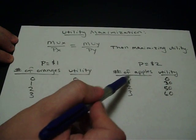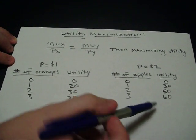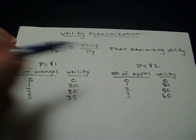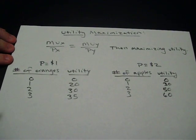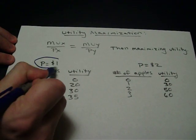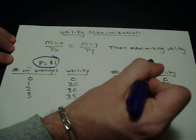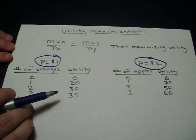Then over here I've got number of apples: 0, 1, 2, 3, and the total utility that they get from purchasing the apples. I've also been told the price of oranges is $1 per, and the price of apples is $2 per.